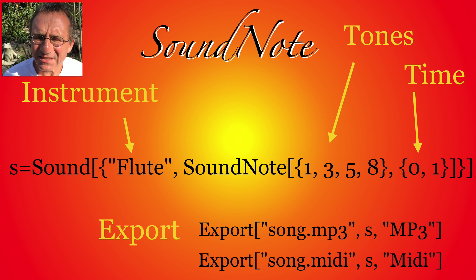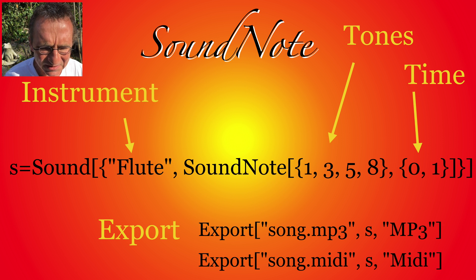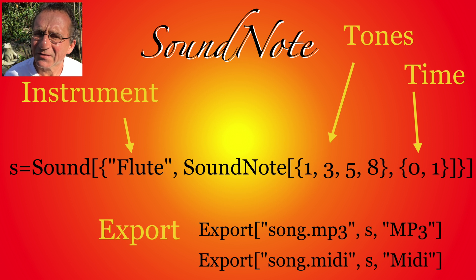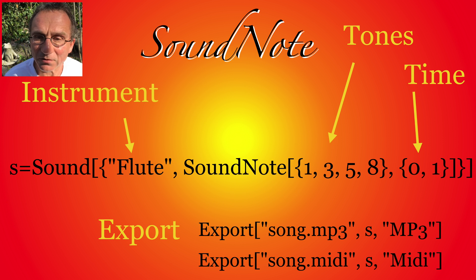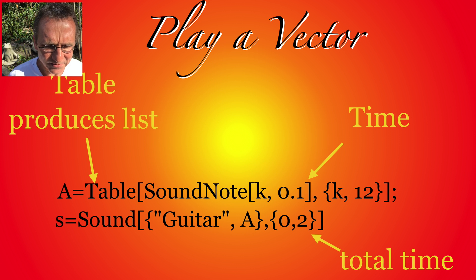A sound note plays a vector of tones — it's a chord for some time. In this case we tell Mathematica to play a flute. With a flute, the tones one, three, five, eight for one second. Then we can export it as an MP3 for iTunes or a MIDI file which you can play on an instrument.